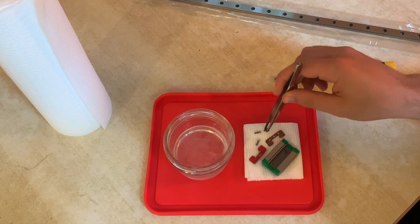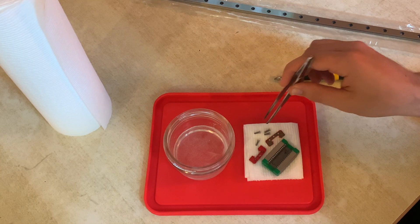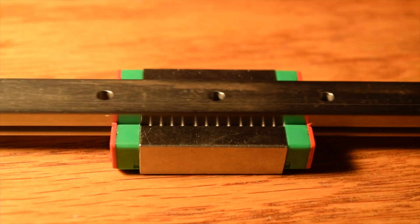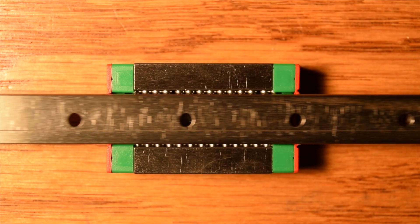After letting all the parts dry, I wiped them clean with a paper towel. Once I assembled all the parts back together, the bearings glided very smoothly along the rail even without proper lubrication.